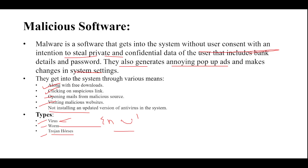Trojan horses are hidden with packers, scripters, or wrappers, which is why they are difficult to detect. Since they can appear as games or application software, users are easily deceived. That is all about malicious software. Thank you.